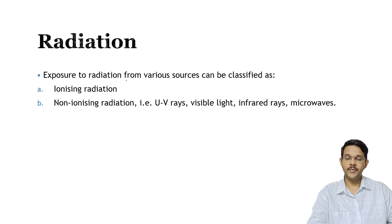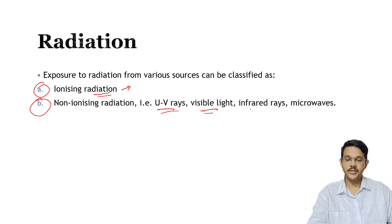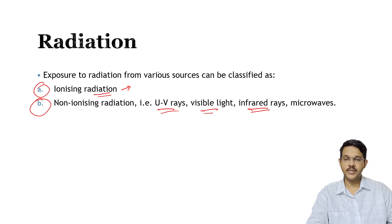Radiation from various sources is divided into ionizing radiation and non-ionizing radiation. Ionizing radiation commonly causes damage to the skin and other tissues. Non-ionizing radiation includes UV rays, visible light from the sun, infrared rays, and microwaves. These are non-ionizing in the sense that they do not interfere with internal cell metabolism.